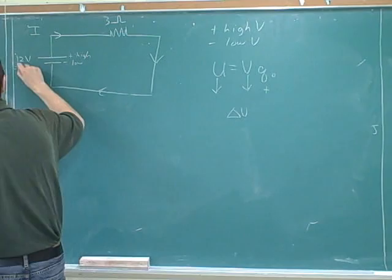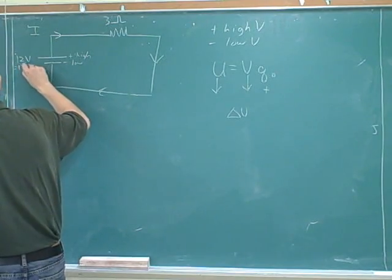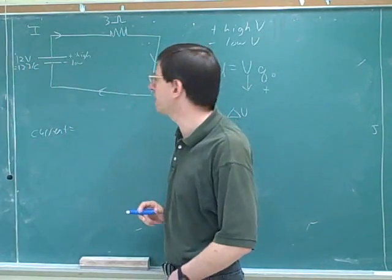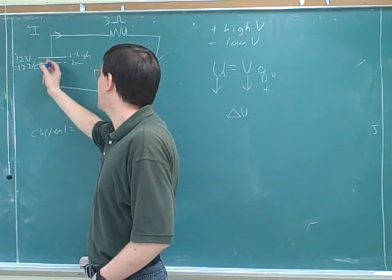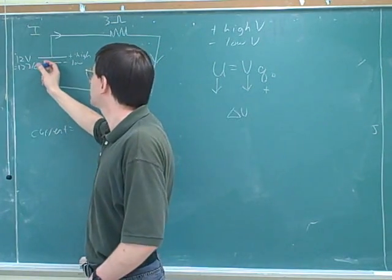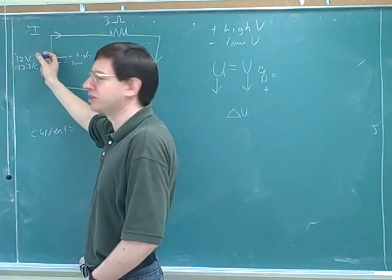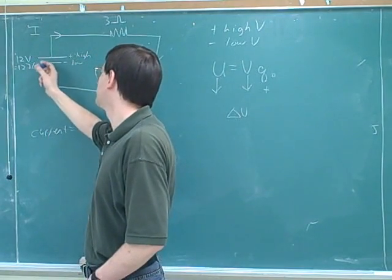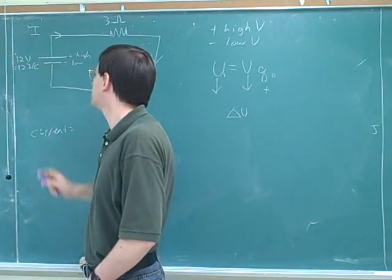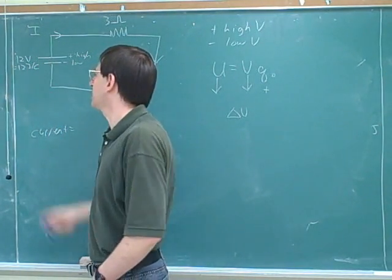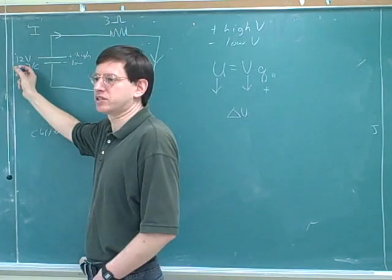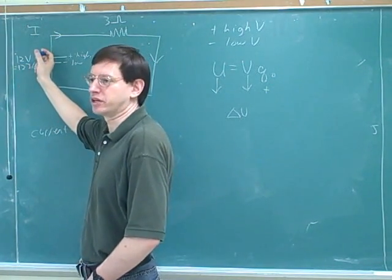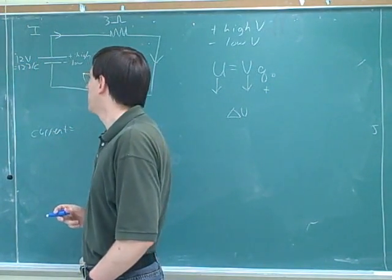Here's where it helps to remember that a volt is a joule per coulomb. This tells us that every time the battery moves one coulomb between the terminals, it has to be giving it 12 joules of energy, which means the battery must be doing 12 joules of work.